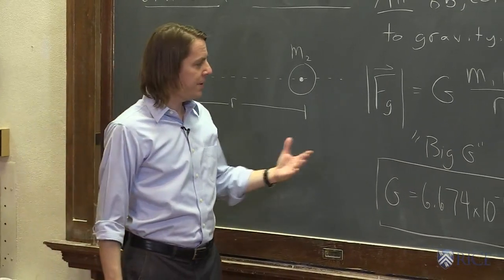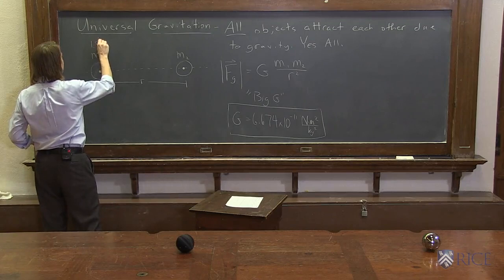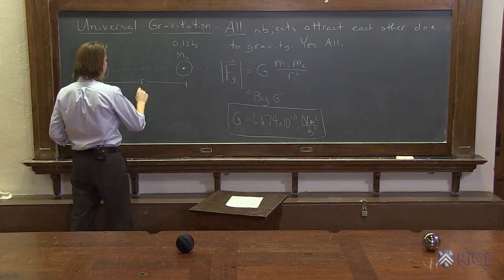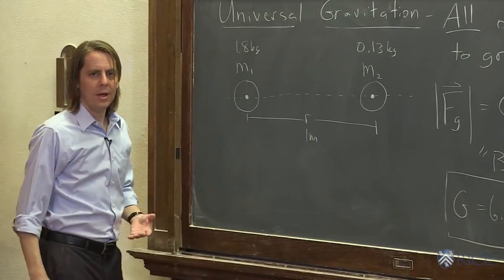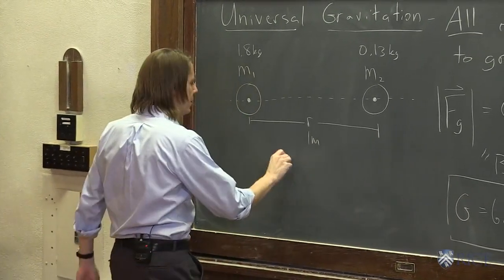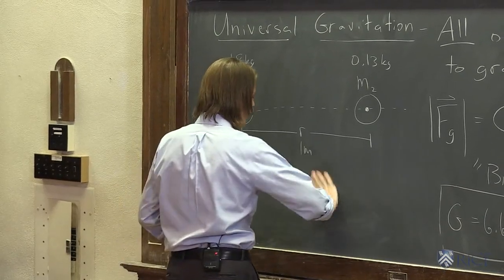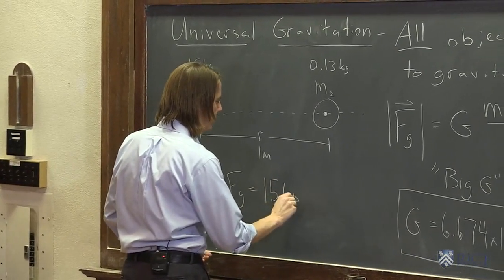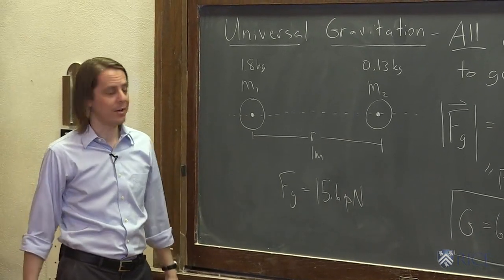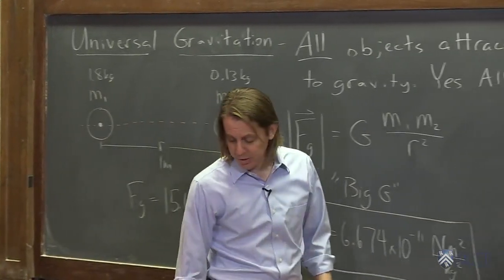In our example, we have Hal at 1.8 kilograms and the plastic at 0.13 kilograms, one meter apart. The gravitational force they feel is only 15.6 piconewtons — that's 10 to the minus 12 newtons. That's really small, not quite enough to overcome static friction to make them move towards each other. But even everyday objects feel a gravitational force between each other.